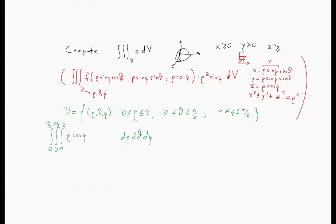So this means that the integrand altogether is rho cubed, cosine phi, sine phi. And at this point, we should actually just do the integration.